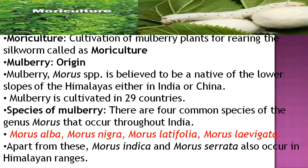The definition of Mori culture is the rearing and cultivation of mulberry trees or mulberry plants. The origin of the mulberry plant is believed to be native to the lower slopes of the Himalayas, either in India or in China. Mulberry cultivation occurs in all states across the country and in nearly 29 countries worldwide.